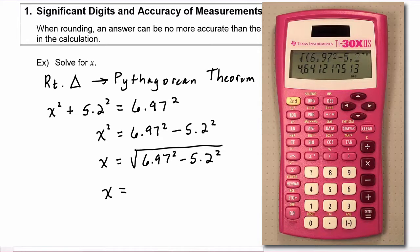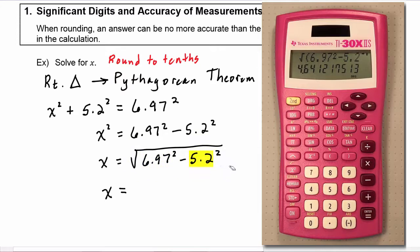So now we have to decide what decimal place we're going to round to. As we look at the numbers in our calculation, we see 6.97 has three significant digits and 5.2 has two significant digits. So we're going to have to round, and our answer can have two significant digits, which in this case means we're rounding to the tenths place. We can't go on to the hundredths place because 5.2 doesn't have a hundredths place, so we're going to have to round x to be 4.6.